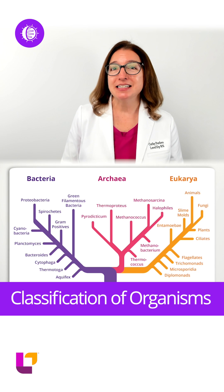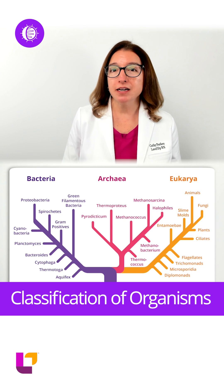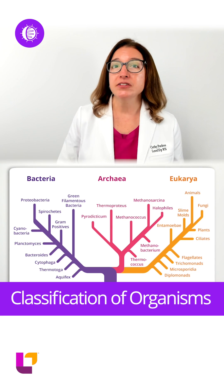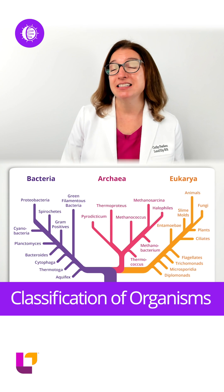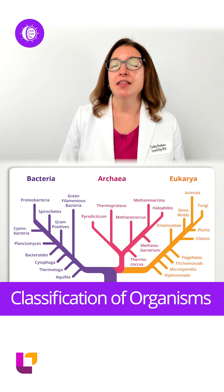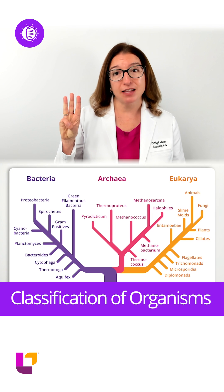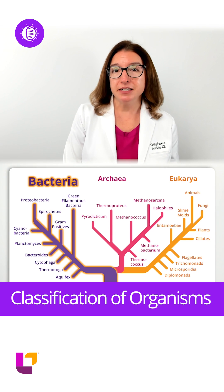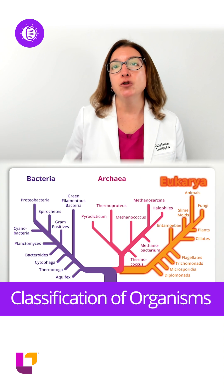The three-domain system is used to classify organisms based on their cells' RNA, cell membrane structure, and sensitivity to antibiotics. There are three main domains of life: bacteria, archaea, and eukarya.